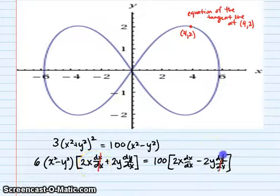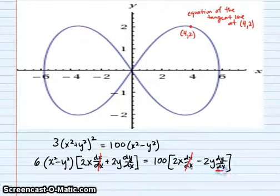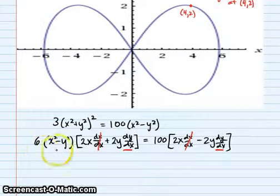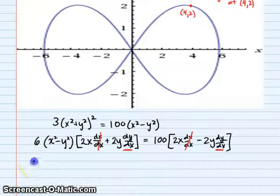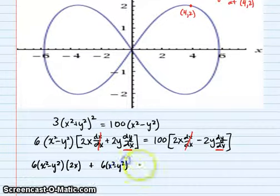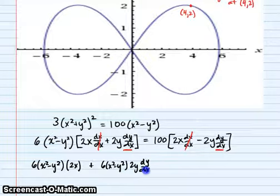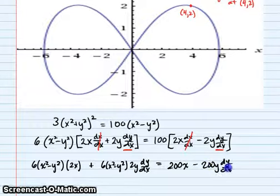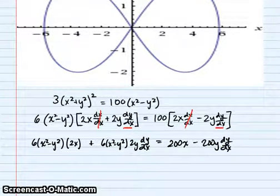We can cross out our dx/dx terms, but now we have dy/dx terms stuck inside those expressions and we need to get at them. We're going to multiply each term through so we can isolate our dy/dx's. So we get 6(x² plus y²) times 2x plus 6(x² plus y²) times 2y dy/dx, and that equals 200x minus 200y dy/dx.